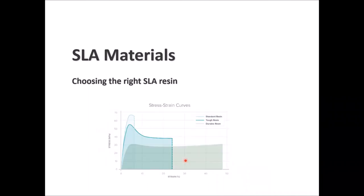Stress-strain curves are also provided for standard, tough, and durable resins. Stress is on the Y-axis in MPa and strain in percentage on the X-axis. Durable resin handles approximately 30 MPa stress but up to 45% strain. Standard resin offers the best stress performance. Tough resin provides a middle ground with medium-high strain and above-medium stress, allowing you to balance the trade-off depending on whether you care more about stress or strain.